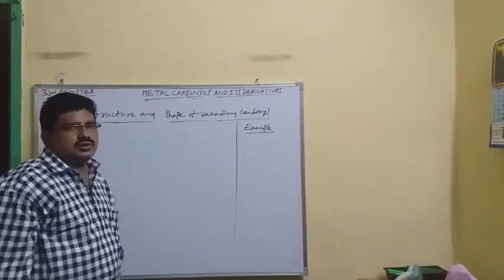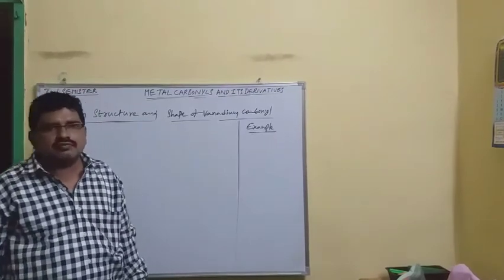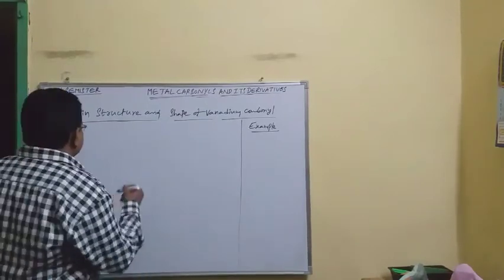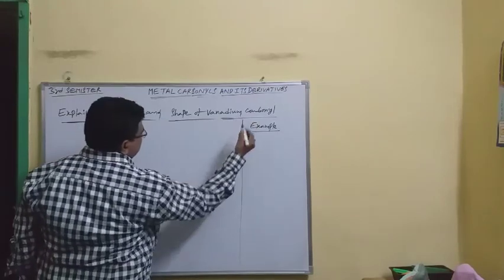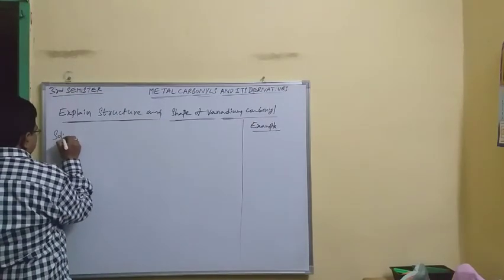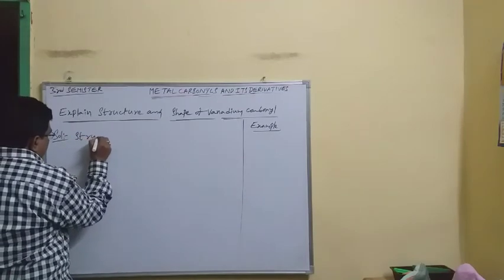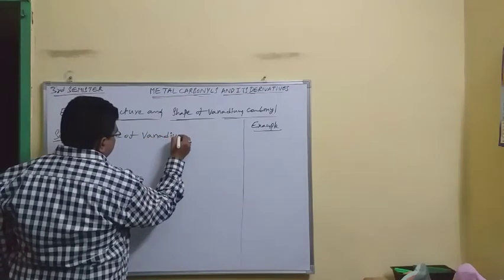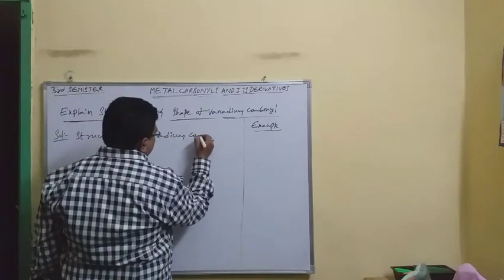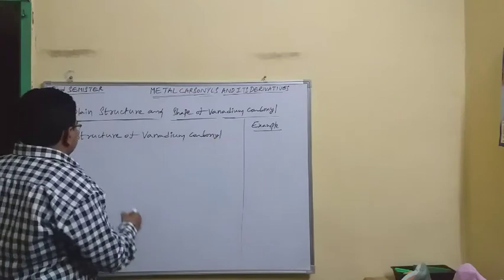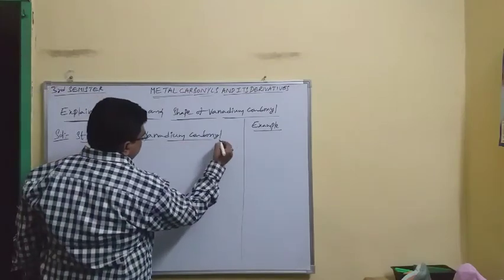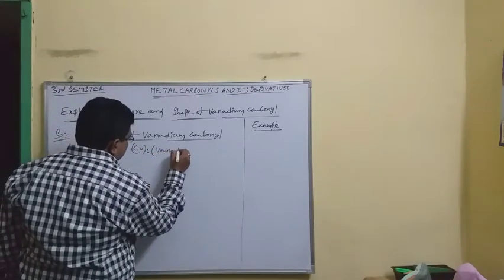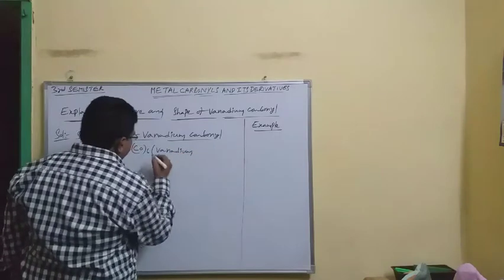Hello students, today's session we are going to discuss the structure and shape of vanadium carbonyl. The formula for vanadium carbonyl is V(CO)6, also known as vanadium hexacarbonyl.